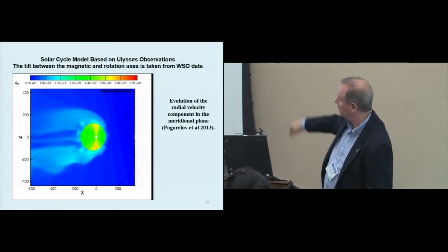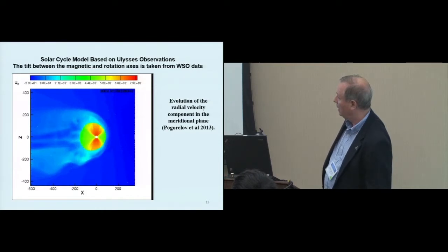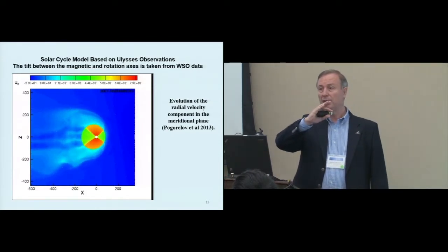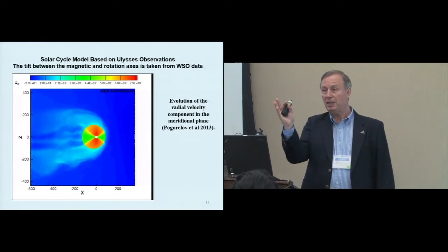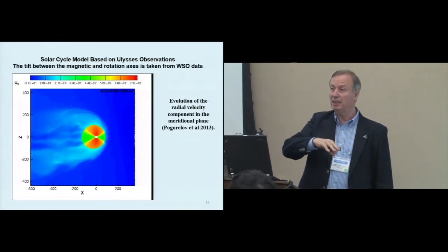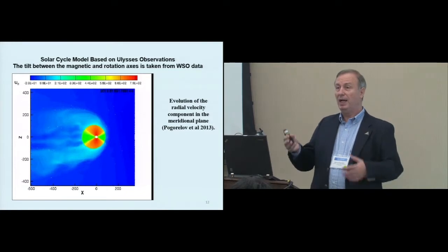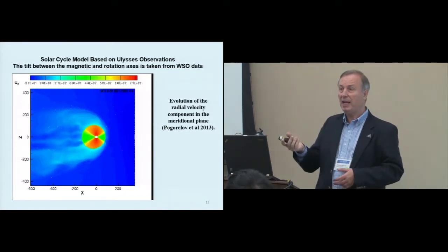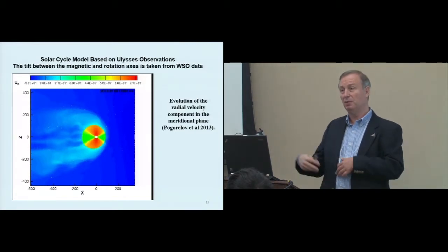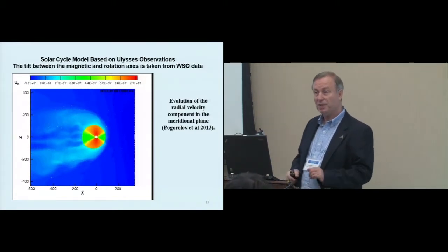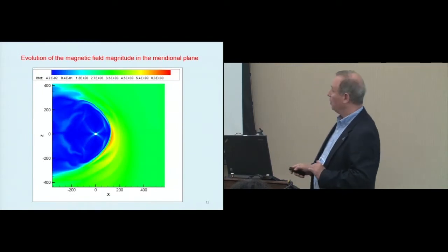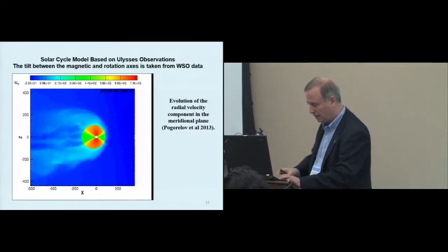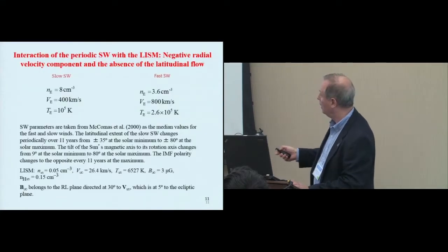This is the solar cycle simulations with the boundary conditions derived from Ulysses observations. Years running over there. That's how it behaves. But the problem is also that the rotation axis and magnetic axis of the Sun, they do not coincide. And the magnetic axis is moving and actually flipping every 11 years to the opposite hemisphere.